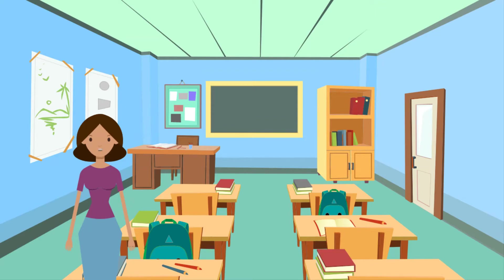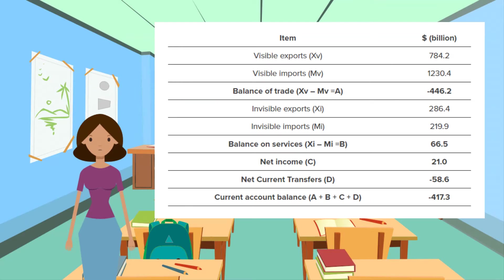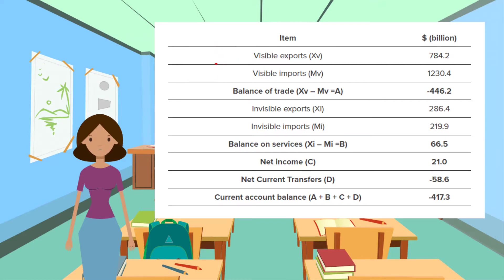First, the current account. The current account records visible trade — these are goods, or physical items, things you can actually touch — and invisible trade — these are services, or things you can't touch. Examples would be banking or financial services.